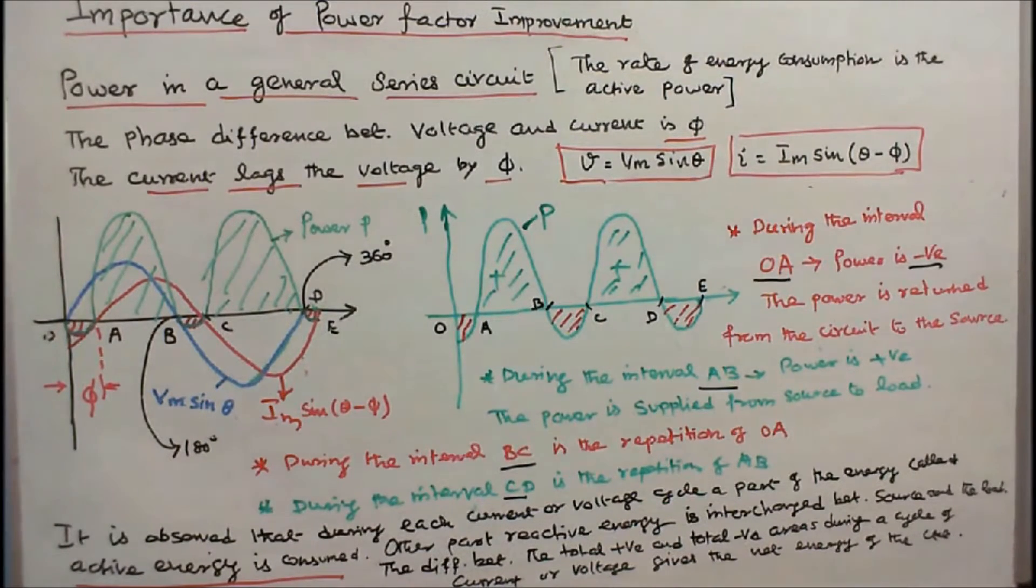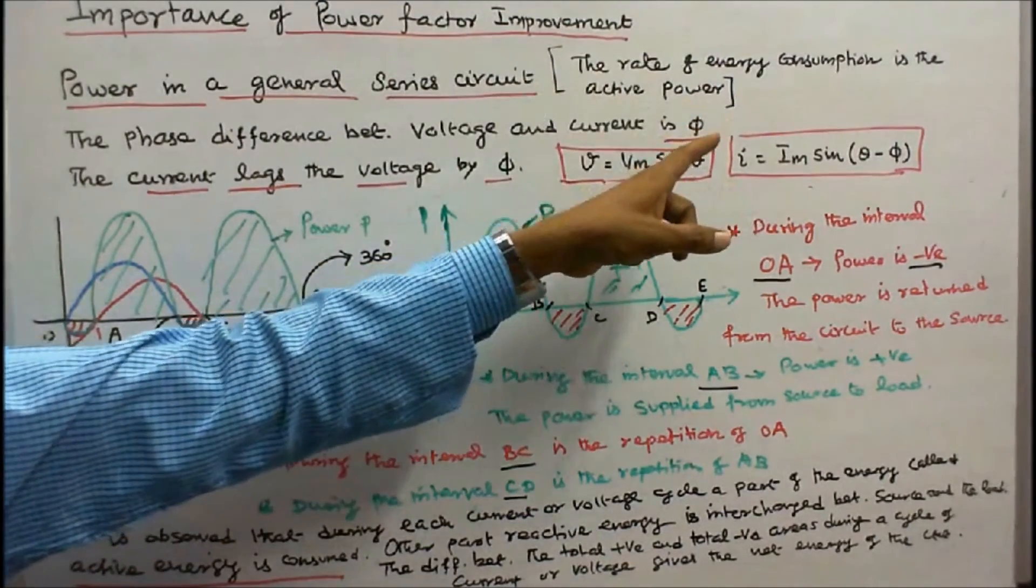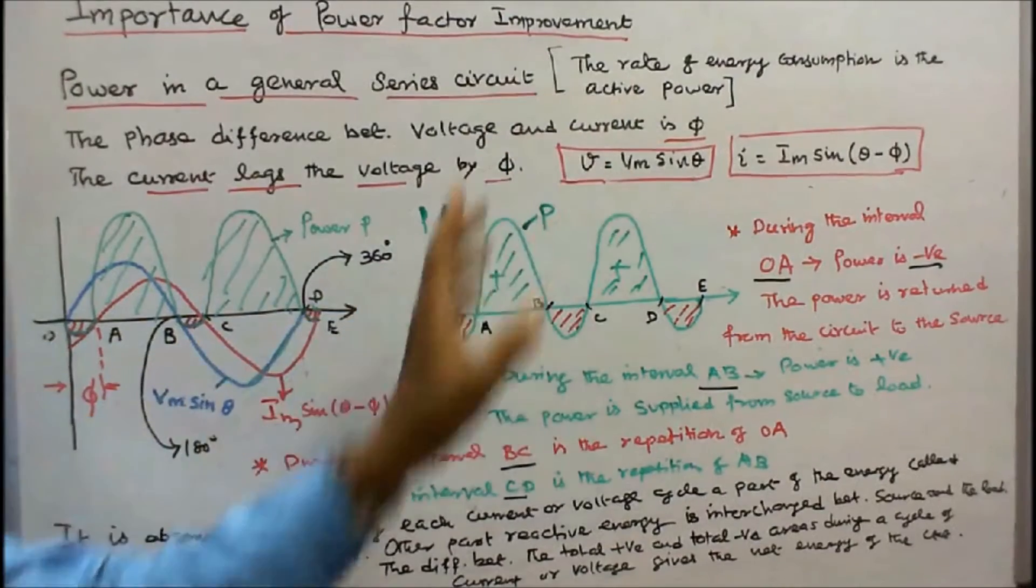The difference between total positive and total negative areas during a cycle of current or voltage gives the net energy of the circuit. The rate of energy consumption is the active power.